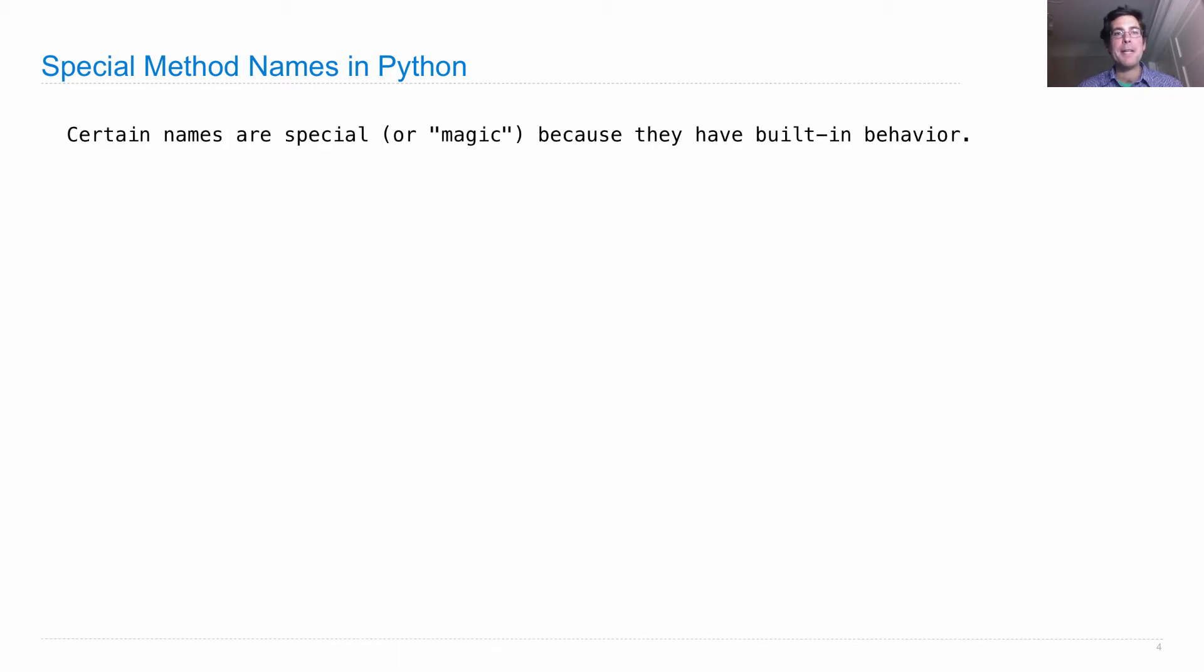Special method names are names that have some special significance. In Python, special method names involve some kind of extraordinary behavior. Certain names are special, or actually the Python docs call them magic, because they have some built-in behavior. They can't just be arbitrary names. You have to use a particular name if you want to get something done. These names always start and end with two underscores, which is that character that looks like a horizontal line down at the bottom of things.